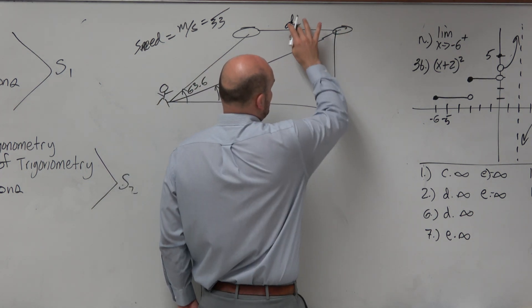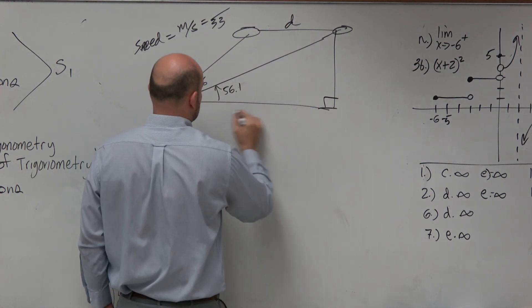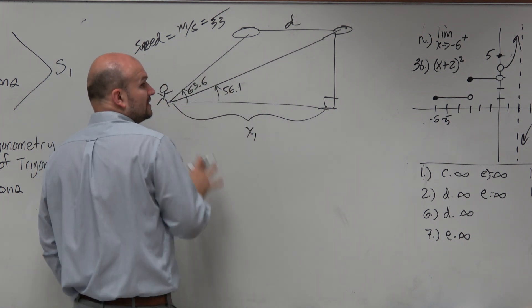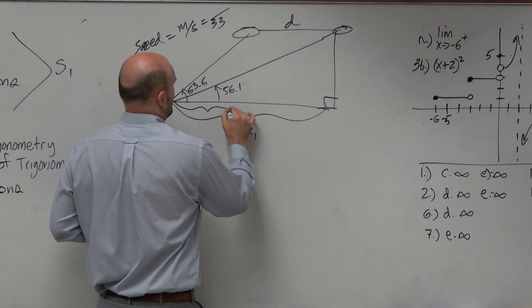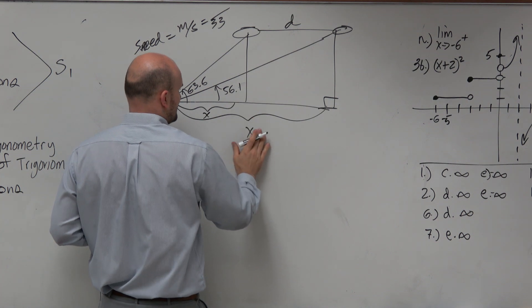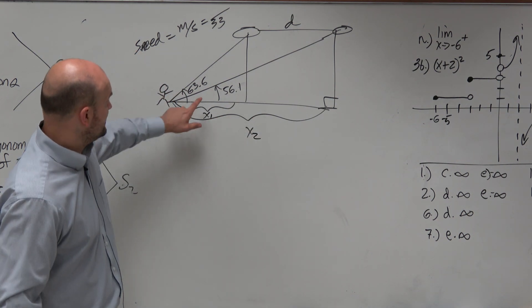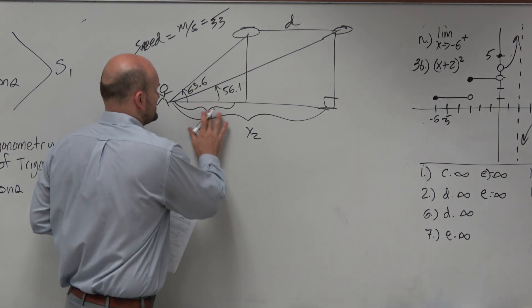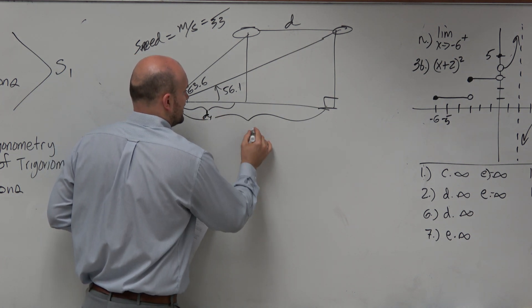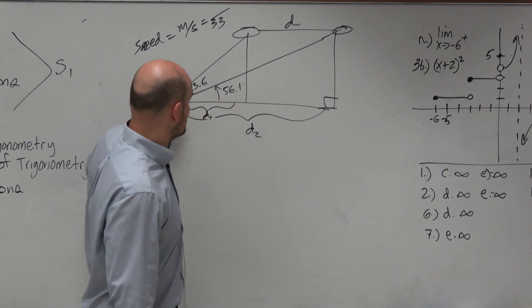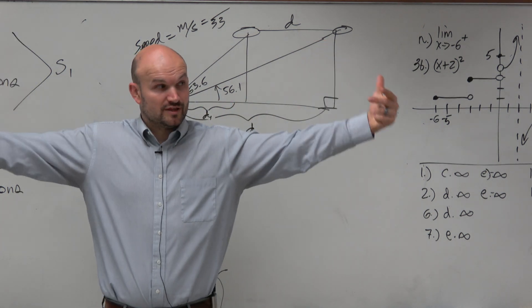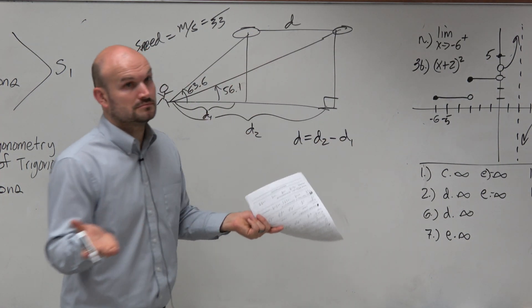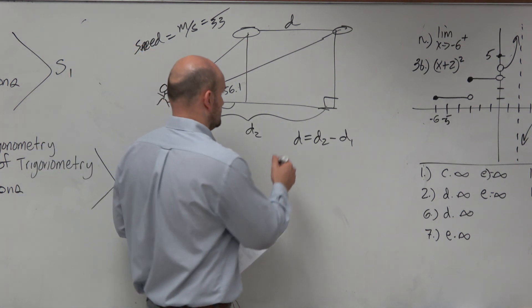Now, can we create a triangle to figure out D? Let's call this big distance, let's call this x1. And then the initial distance that the plane is, let's call that x2. Actually, let's call this x2 and this one x1. Let's use distance number one. How about that? Distance one and distance two. After 33 seconds, the plane is now at distance two. If we want to know how far the plane traveled, which is D, we are going to say D equals D2 minus D1. Agreed?